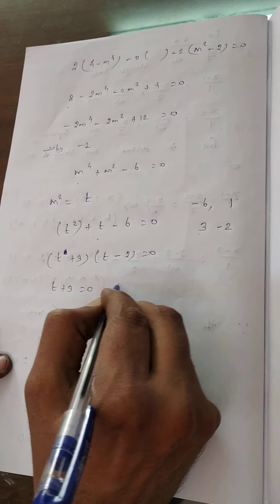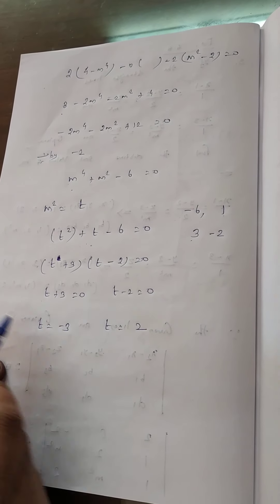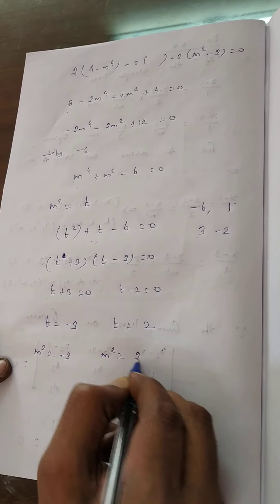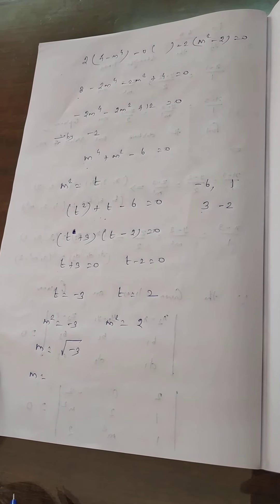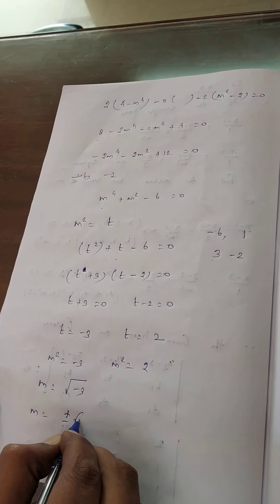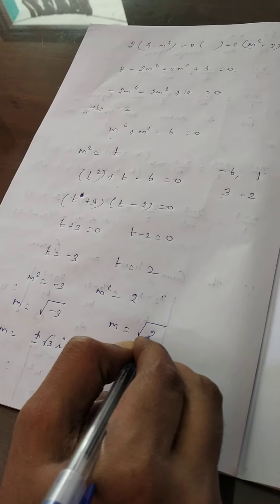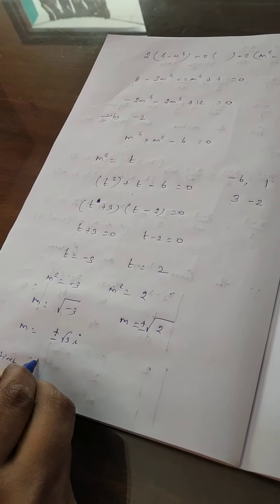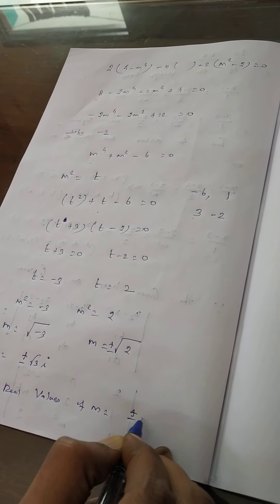Therefore, m² + 3 = 0 or m² − 2 = 0, giving m² = −3 or m² = 2. Since m² = −3 gives m = ±√(−3) = ±√3·i, which is imaginary, we discard it. From m² = 2, m = ±√2. The distinct real values of m are ±√2.